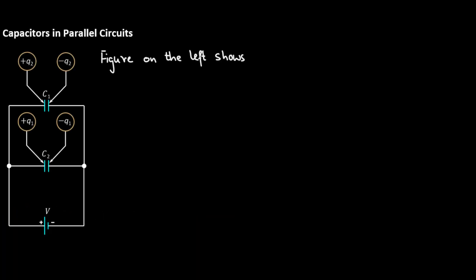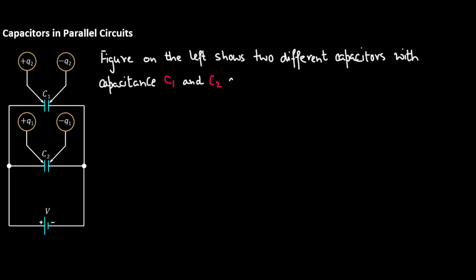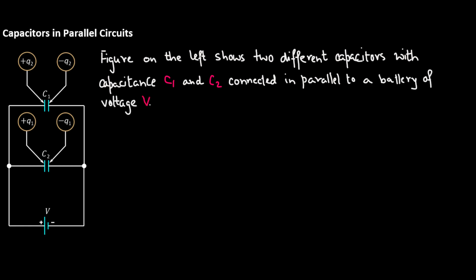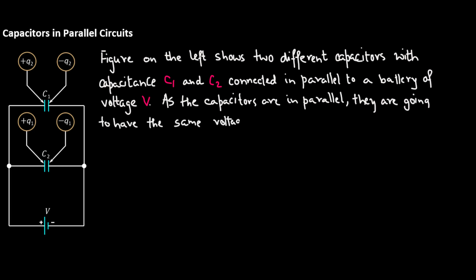Capacitors in Parallel Circuits. The figure on the left shows two different capacitors with capacitance C1 and C2 connected in parallel to a battery of voltage V. As the capacitors are in parallel, they are going to have the same voltage V across their plates.